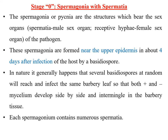The spermogonium plays the role of sex organs: spermatia are the male sex organs and receptive hyphae are the female sex organs, and both are produced from the spermogonium. Spermogonia are formed near the upper epidermis after basidiospores land on the barberry leaf, produce mycelium, and the mycelium develops internally — forming flask-shaped pycnial structures bearing sporophores that give rise to spermatia and receptive hyphae. Spermogonia form approximately four days after infection of the host by basidiospores.